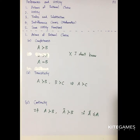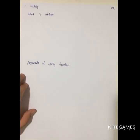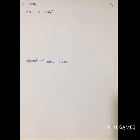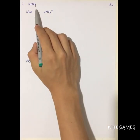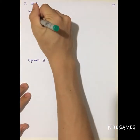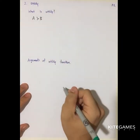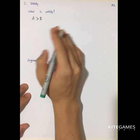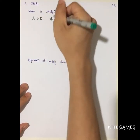After discussing the axioms of rational choice, let's move to the measure of how people make decisions. The most popular measure is called utility. Utility is a function that maps qualitative bundles into quantitative variables. 'Better' is a feeling — you cannot use mathematics to compare it directly.